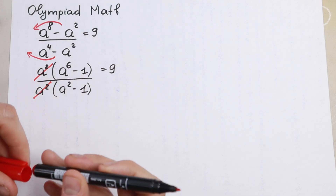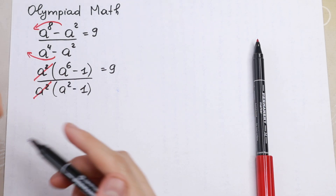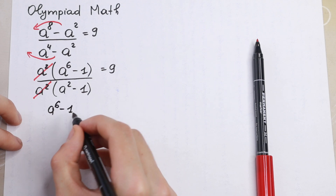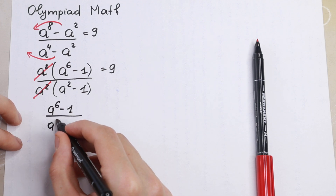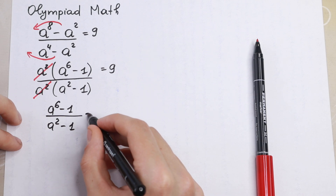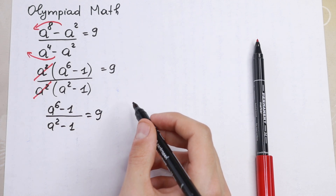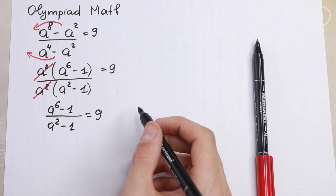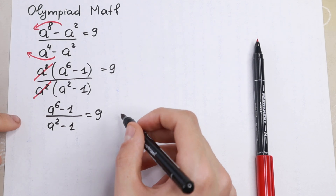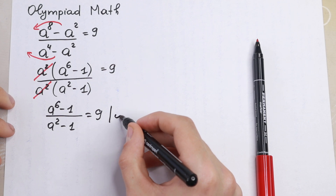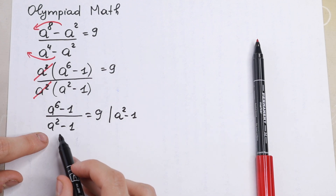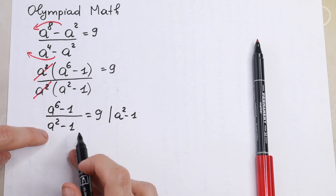So what equation will we have after this canceling? We will have (a⁶ - 1) divided by (a² - 1), equal to nine — a little simplification after this step. Now let's multiply both sides by (a² - 1), because if we multiply by this element we eliminate the denominator, which is good for us.